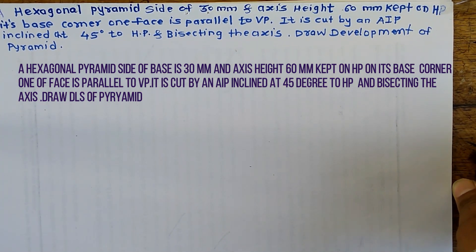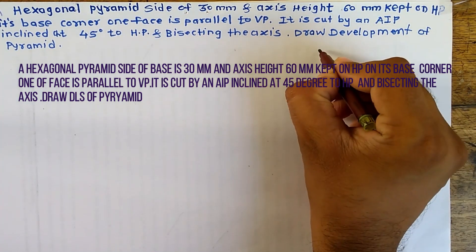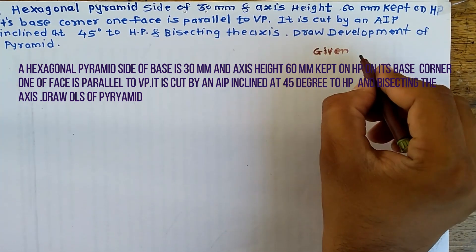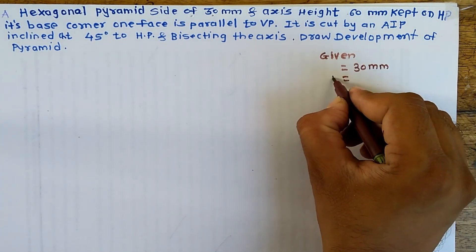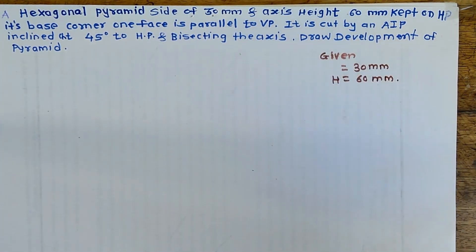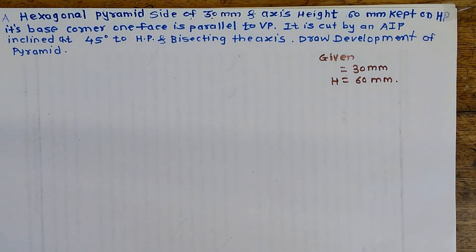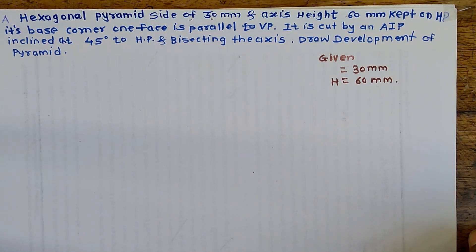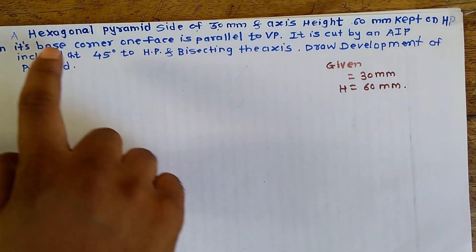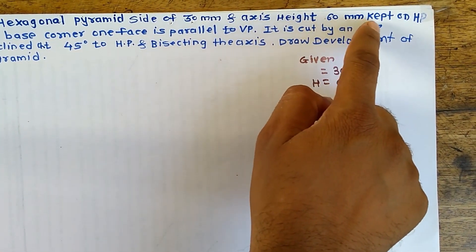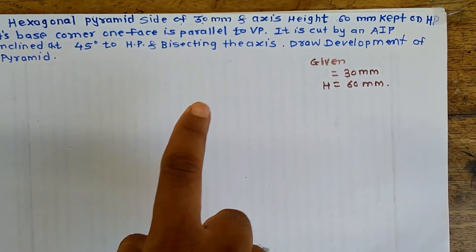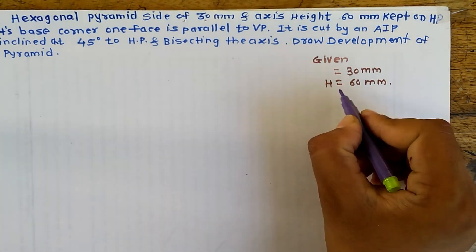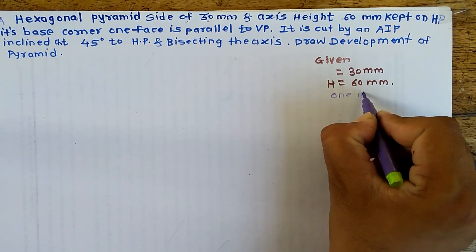As per the problem statement we have to write the given data. The side dimension is 30 mm and the axis height is 60 mm. We will start to draw the hexagonal pyramid. In top view, the hexagonal pyramid will look like a hexagon - an exact hexagon of side 30 mm. The pyramid is resting on HP on one of its corners.